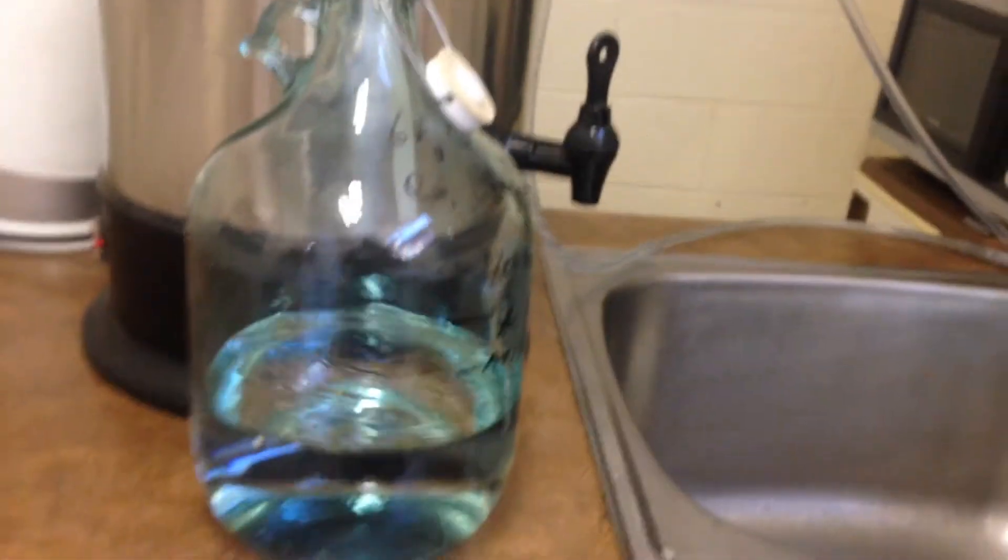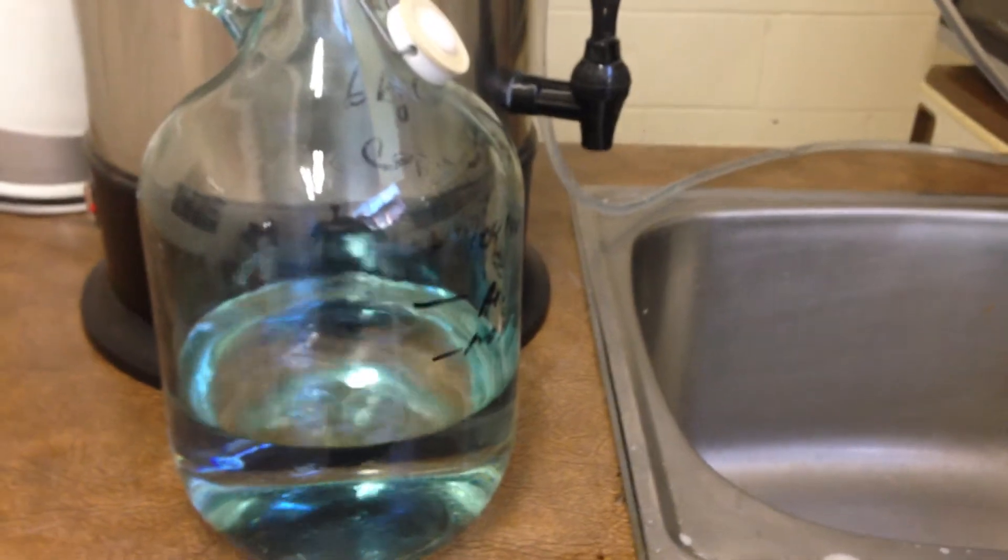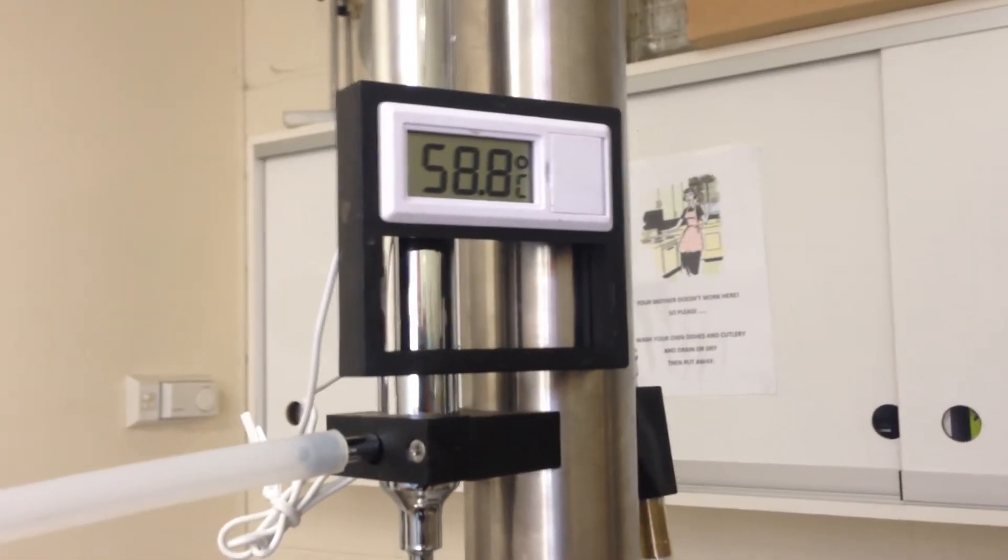We've probably drawn off around 2 to 3 litres at this stage. Always good to draw it off into glass. And that's it, the Turbo 500 running beautifully.